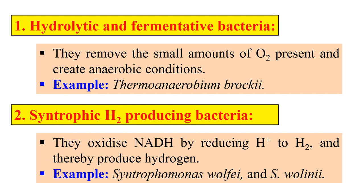The second group is syntrophic hydrogen producing bacteria. These are also called obligate hydrogen producing or obligate proton reducing bacteria because they oxidize NADH by reducing H⁺ to H₂. These bacteria break down organic acids and ultimately produce carbon dioxide and hydrogen. Examples include Syntrophomonas wolfei and Syntrophomonas wolinii.